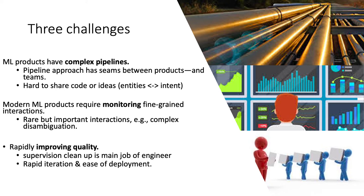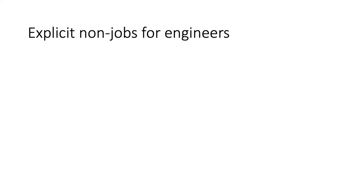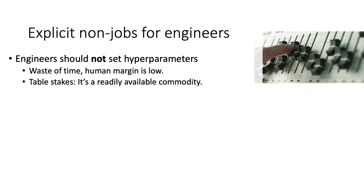The third goal of the best teams was to make those quality charts go up and to the right. The best teams spent their time refining and understanding the problem, so we wanted to automate things to make it easy to deploy and rapidly iterate, freeing them for understanding rather than deployment. My view is that there are a couple of explicit non-jobs for engineers we wanted to automate: engineers should not set hyperparameters. If your algorithm depends on a particular random seed, it's not an algorithm. Hyperparameter tuning has been in scikit-learn for a long time — it's not hard to build.